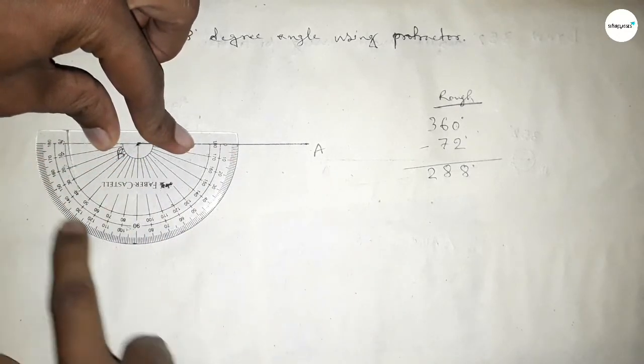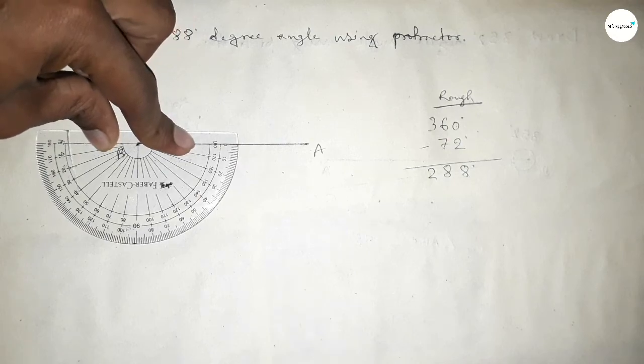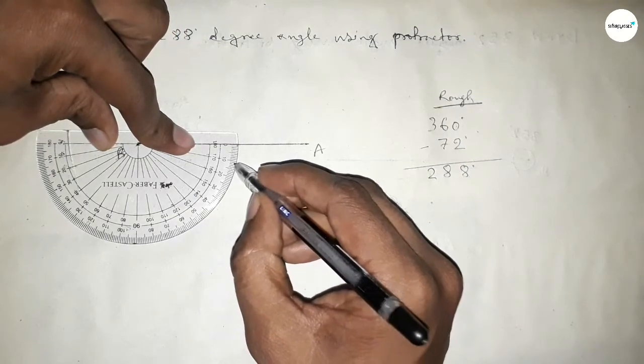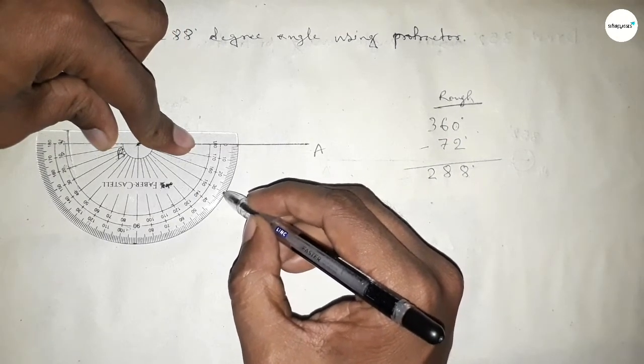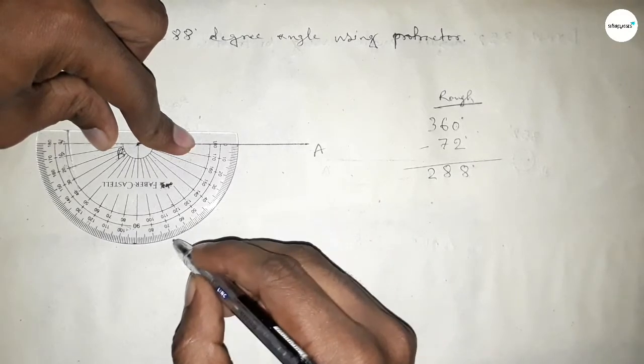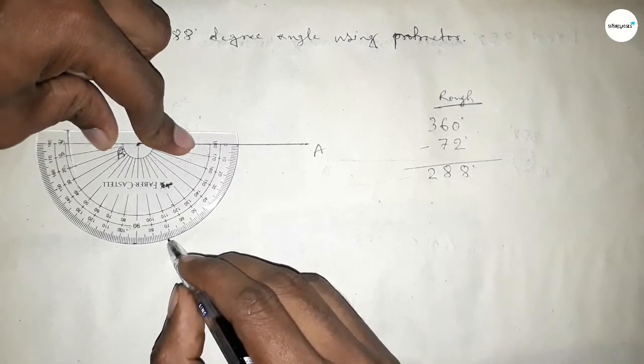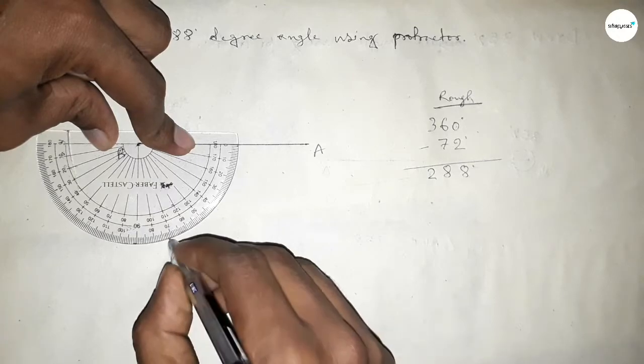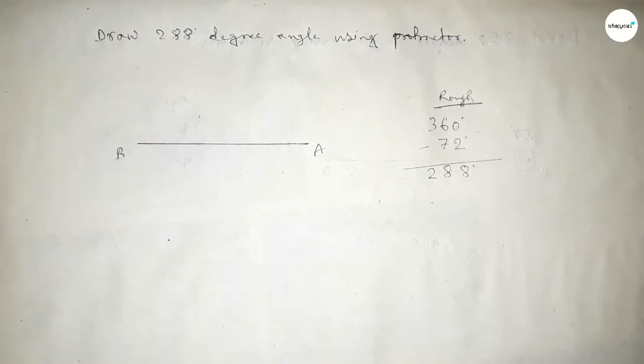Now counting 72 degrees: 10, 20, 30, 40, 50, 60, 70, and this is 71, 72. So if we subtract 72 degree angle from 360 degree, then we can get 288 degree angle.